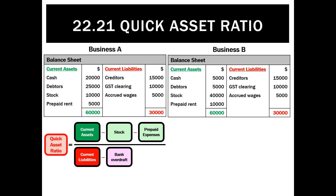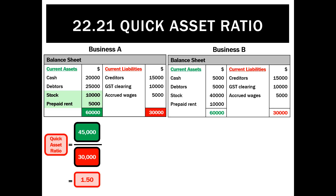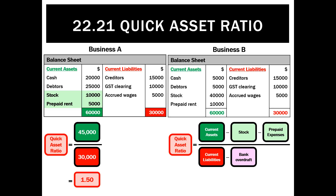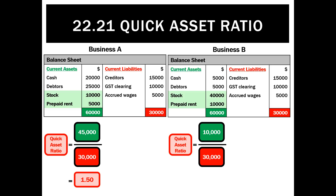So if we calculate the quick asset ratios for the two examples we started with: business A has current assets of 60, minus stock of 10 and prepaid rent of 5, giving 45,000. With current liabilities of 30,000 and no bank overdraft, that's 45 divided by 30 = 1.5 to 1. But for business B, current assets of 60 minus stock of 40,000 — which is common for a retailer like Myer — and minus prepaid rent of 10,000, leaves only $10,000 of current assets in cash and debtors to pay $30,000 of current liabilities. That's a ratio of 0.33 to 1 — a really bad ratio. We just don't have enough quick assets to pay our urgent current liabilities.